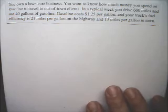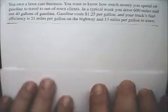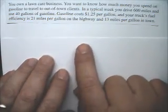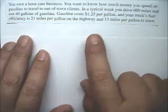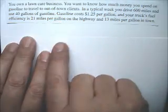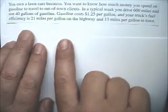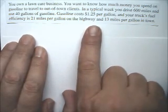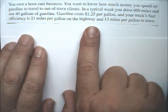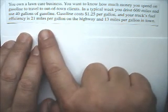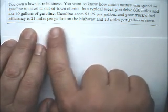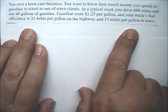Example 4 talks about a lawn care business, and you want to know how much money you spend on gasoline to travel to out-of-town clients. You drive 600 miles, use 40 gallons of gasoline, gasoline costs $1.25 per gallon, and it gives the fuel efficiency on the highway and the fuel efficiency in town.